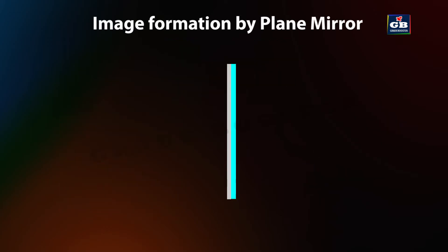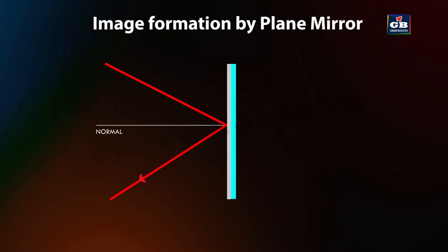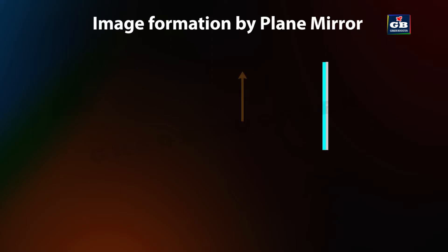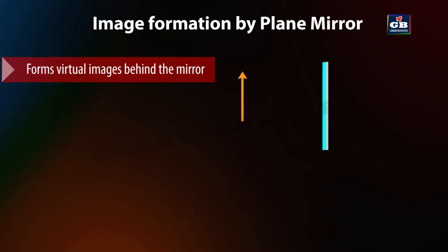When a light ray strikes a plane mirror, it gets reflected back according to the laws of reflection. The angle of reflection is equal to the angle of incidence.